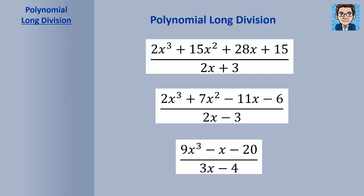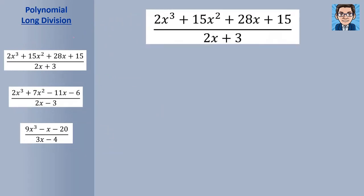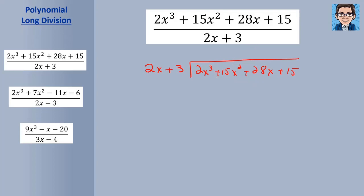Let's take a look at a few polynomial long division problems. For the first problem, let's set it up as a long division: put 2x plus 3 on the outside and 2x to the third plus 15x squared plus 28x plus 15 on the inside. The first thing we have to figure out is how many times 2x goes into 2x to the third — we're going to need to multiply by x squared. I'll put x squared here, lined up above the x squared term to keep things in order. I know I'm going to need an x squared, an x, and a constant term in my final answer.